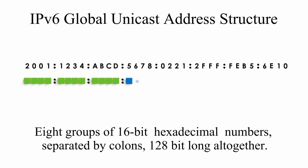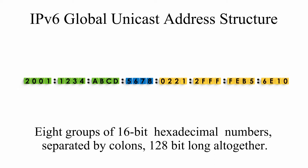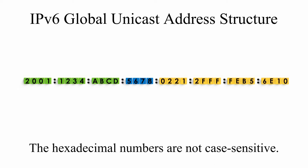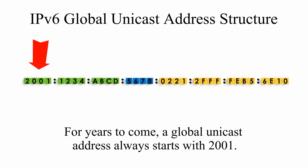It consists of 8 groups of 16-bit hexadecimal numbers, separated by colons, 128-bit long altogether — very long and complicated. The hexadecimal numbers are not case sensitive. Lowercase letters are suggested to use, even though I use uppercase here. For years to come, a global unicast address always starts with 2001.